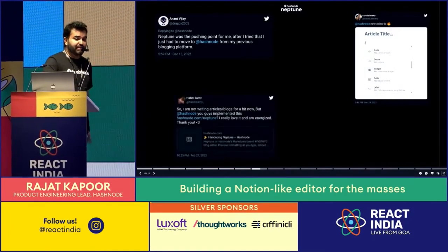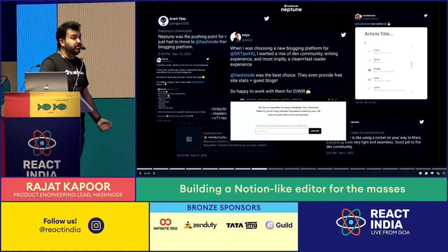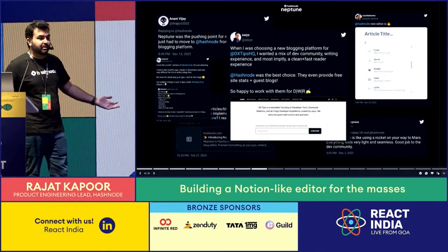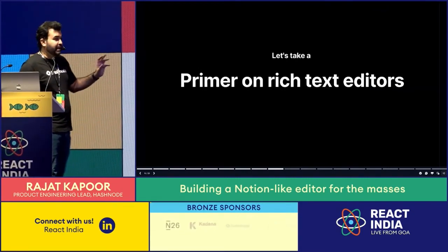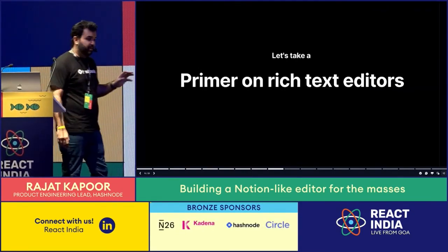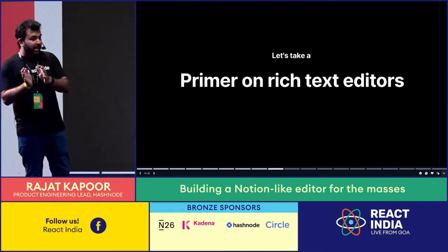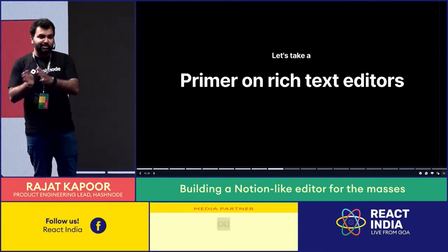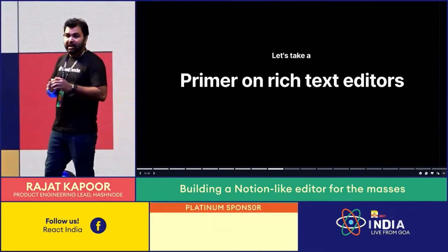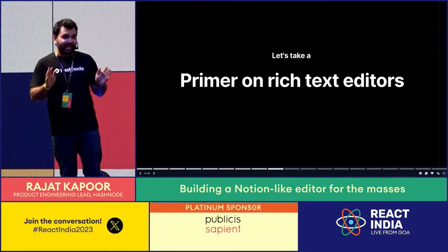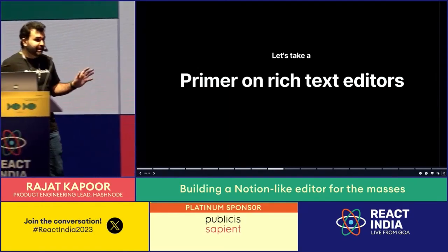When we launched Neptune, we satisfied a lot of our users — they were happy, and we saw big people in open source moving their blogs to Hashnode. Now we'll look at some code. I'm going to give you a brief primer on rich text editors using TipTap code, but the concepts are fairly generic — Slate, ProseMirror, Quill, and Lexical all use very similar concepts.